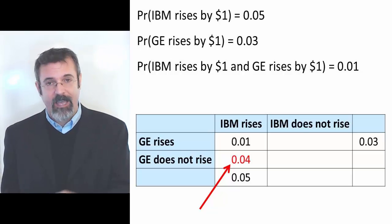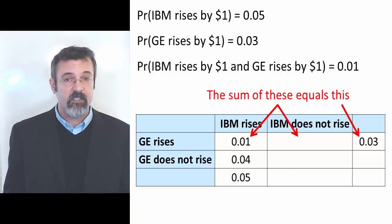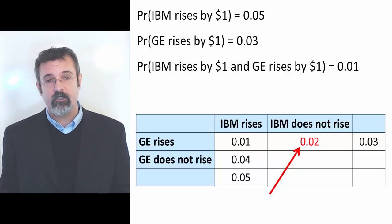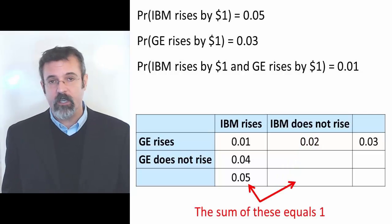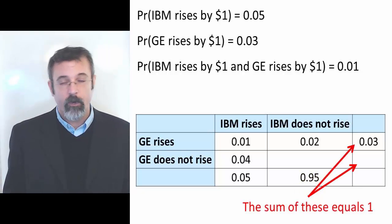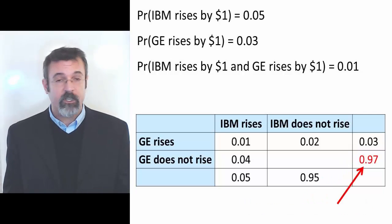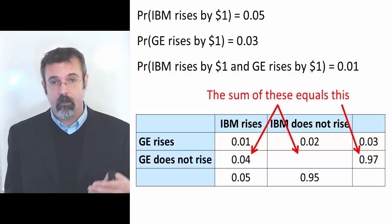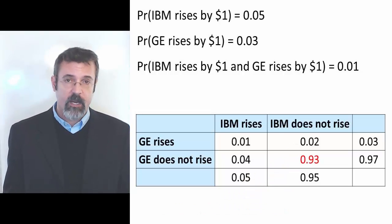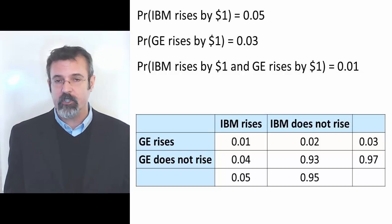Adding the numbers horizontally, the body cells must add up to the margin. These two numbers have to add up to 0.03, which means this number must be 0.02. The marginal probabilities along the bottom margin must add to 1 — we have 0.05, so the other cell must be 0.95. Similarly, the marginal probabilities in the right margin must add to 1 — we have 0.03, so the other cell must be 0.97. The one remaining cell can be found by adding either horizontally or vertically; either way gives us 0.93. We can then use this table like the Venn diagram to answer all sorts of questions about IBM and GE stock.